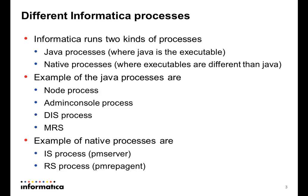Informatica can run two kinds of processes. One is a Java process, where the executable will be Java. Some examples of Java processes are the Node process, Admin Console process, the DIS process, and the MRS process. All these will have an executable of Java.